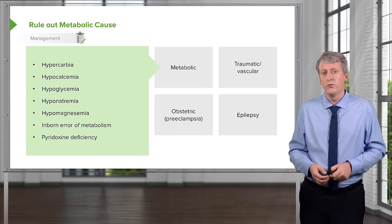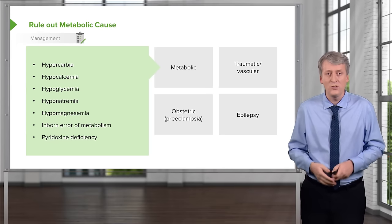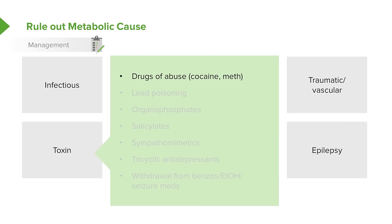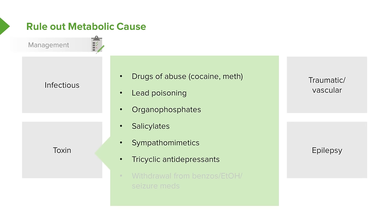Pyridoxine deficiency can also cause seizures, and sometimes a dose of vitamin B6 is the cure, especially in newborns. In traumatic or vascular disease, patients can get seizures from cerebral contusions, stroke, child abuse, trauma, or any cause of intracranial hemorrhage. Toxins can also cause seizures — cocaine and methamphetamine cause vascular constriction leading to brain ischemia. Lead poisoning, organophosphates, salicylates, sympathomimetics, tricyclic antidepressants, or withdrawal from drugs of abuse can all cause seizures.